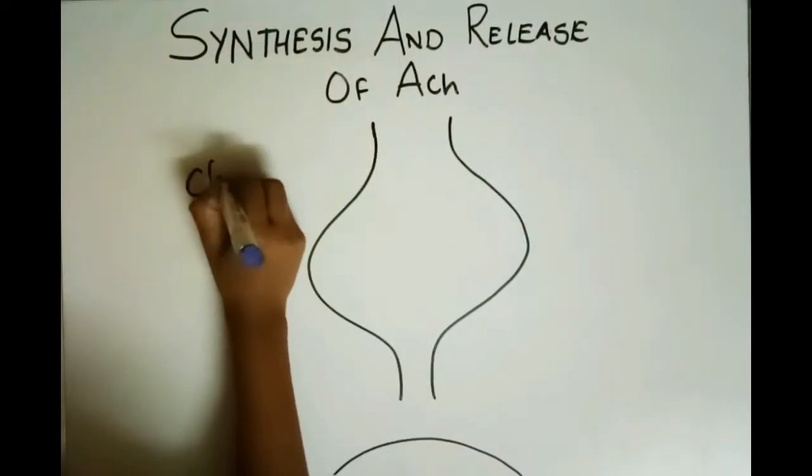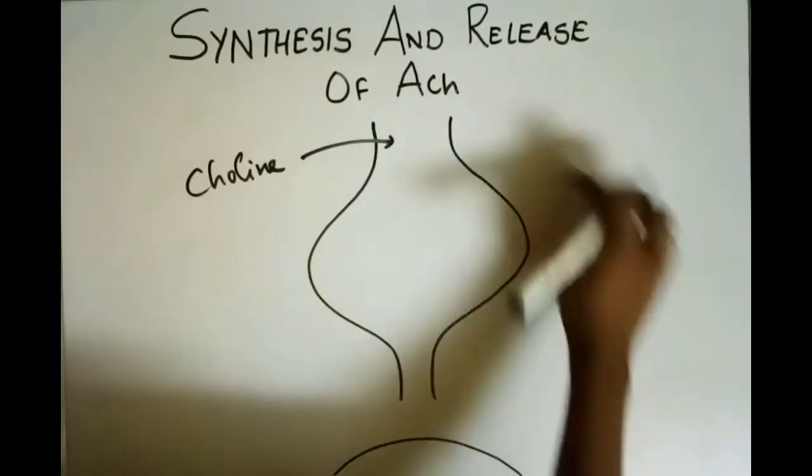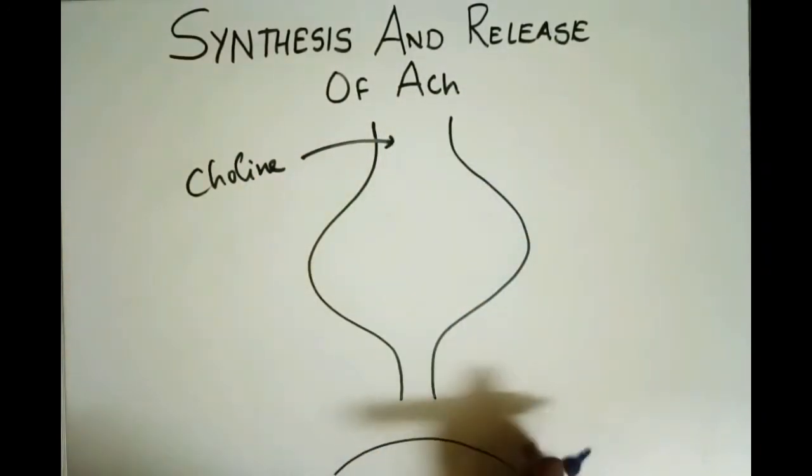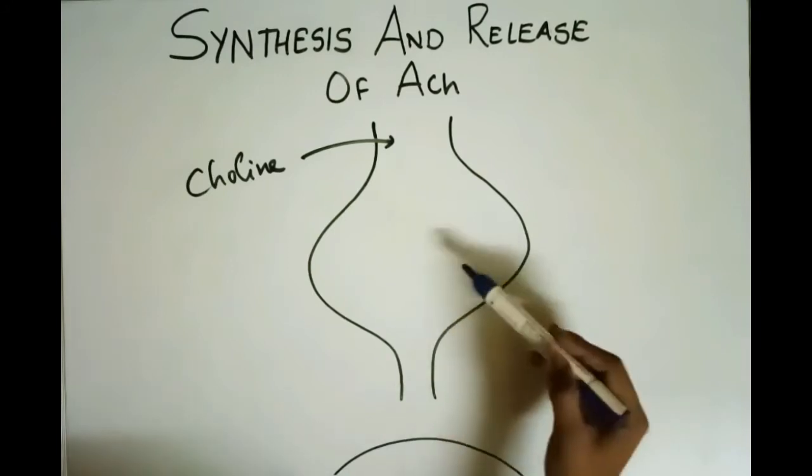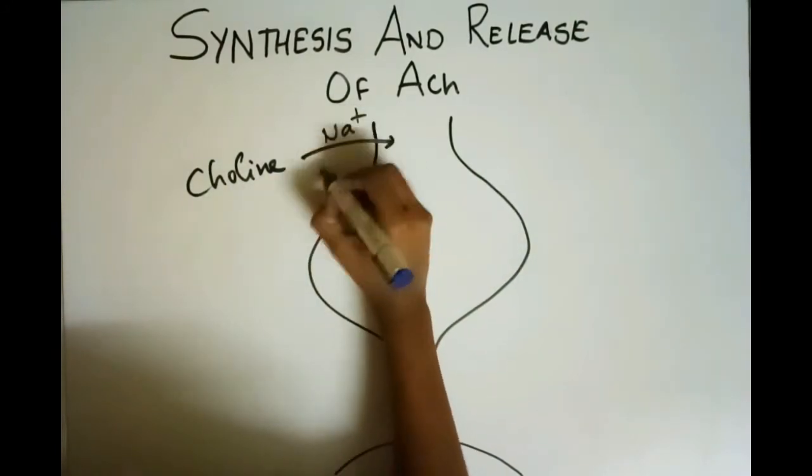The choline is taken up. This is the presynaptic neuron and this is the postsynaptic neuron. The presynaptic neuron will take up the choline with the help of sodium choline transporter.